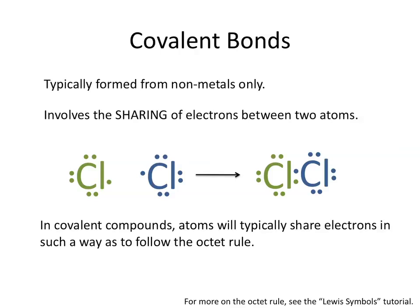Just like in ionic compounds, in covalent compounds atoms will typically share electrons in such a way as to follow the octet rule — meaning each atom is surrounded by eight electrons, and each atom gets to count both of the bonding electrons.